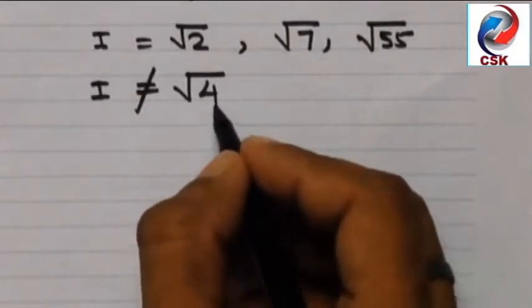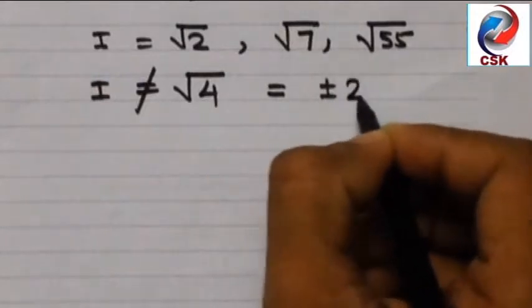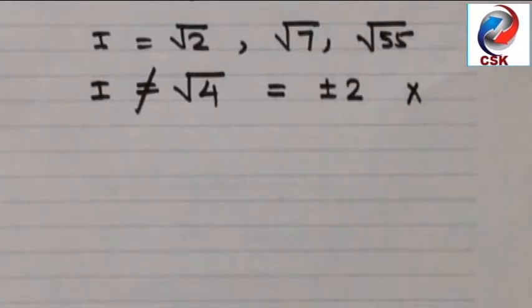Now let us consider i is equal to root 4. This is a rational number because this is equal to plus minus 2. So this cannot be an irrational number.